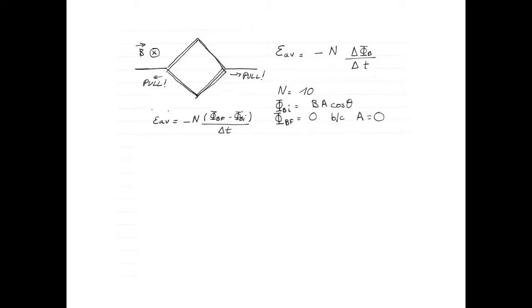Our final magnetic flux will be 0, because the area is 0. So things are going to be pretty easy to calculate.